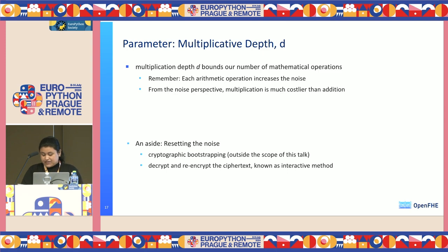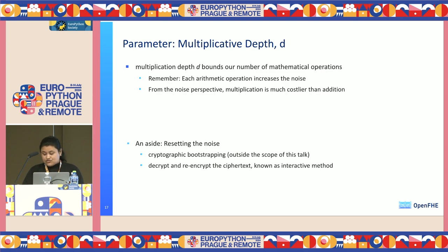The multiplicative depth D plays a crucial role in bounding the number of mathematical operations that can be performed on ciphertext. It determines the maximum number of sequential multiplications that can be executed before reaching a limit, and directly impacts ciphertext size and computation time. Each operation such as addition or multiplication increases ciphertext noise — multiplication is much costlier than addition from a noise perspective. To address noise accumulation, cryptographic bootstrapping is used: decrypting the ciphertext, performing necessary operations on plaintext, then re-encrypting to obtain a new ciphertext with reset noise.